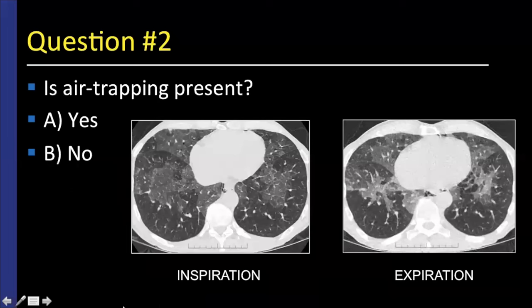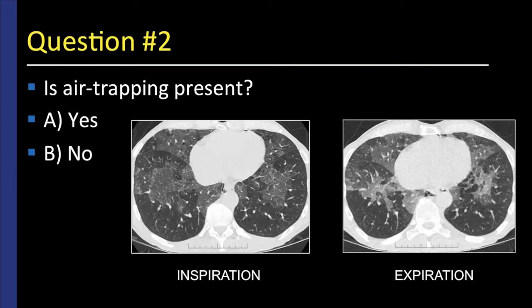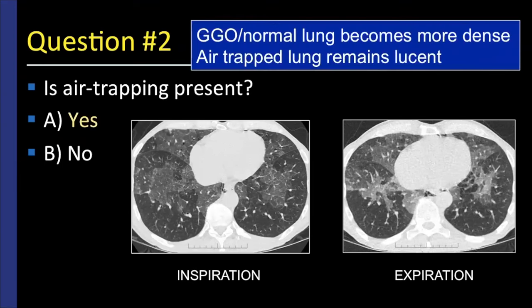Let's test your knowledge on detection of gas trapping. Do you think air trapping is present in this case? The expiration scan was done with a good expiratory effort. There's also a little bit of pneumomediastinum seen anteriorly. Yes, there is gas trapping here. As a reminder, areas of normal lung or ground glass opacity become progressively dense on expiration scanning, whereas gas-trapped lung remains lucent or becomes progressively more lucent.